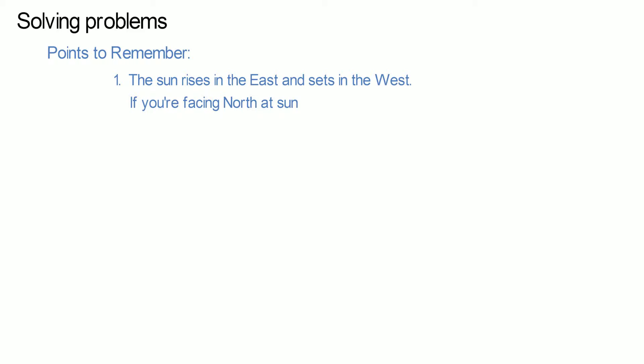Solving problems. Points to remember. Number one. The sun rises in the east and sets in the west. If you are facing north at sunrise, your shadow will be on your left.